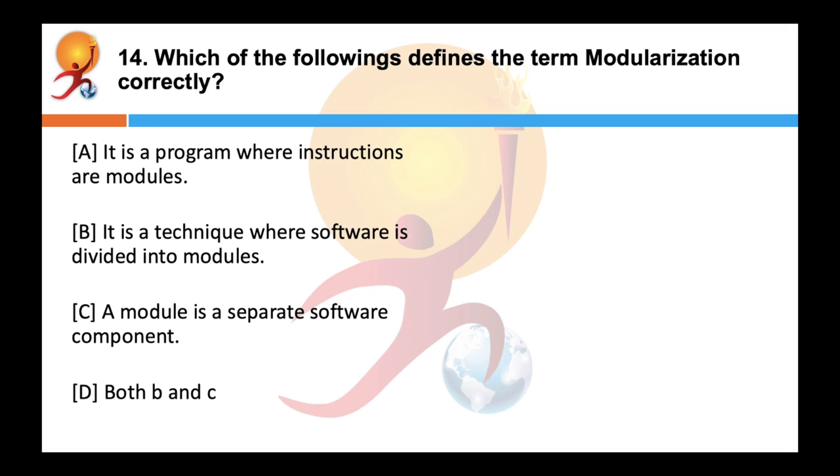Which of the following defines the term modularization correctly? Correct answer is D both B and C. The term basically means the design or production of something in separate sections. So modularization is a technique to divide a software system into multiple discrete modules which are expected to carry out tasks independently.